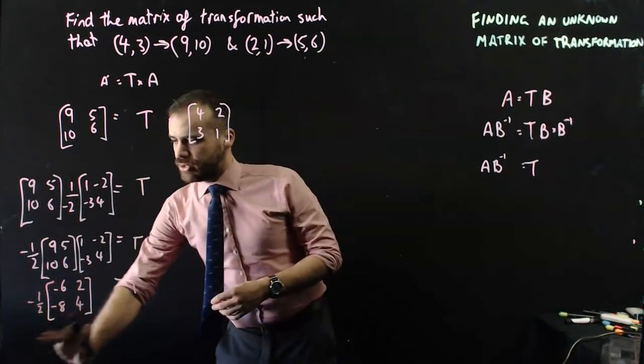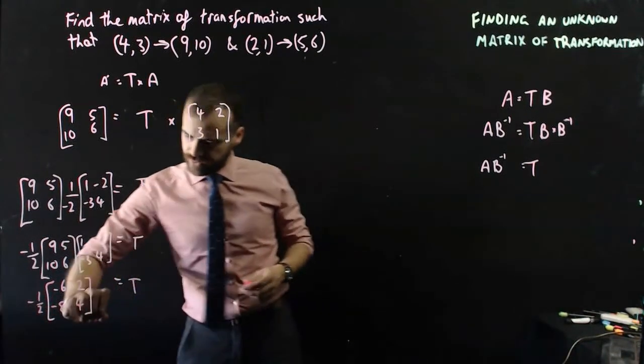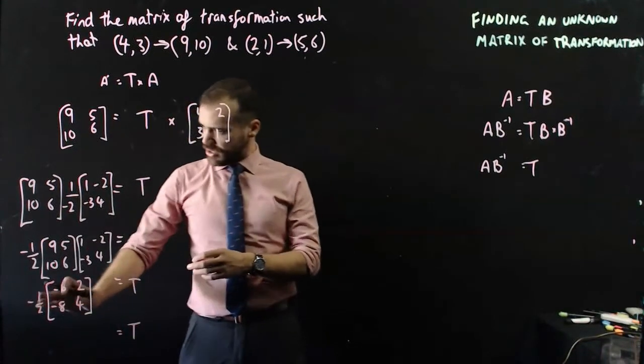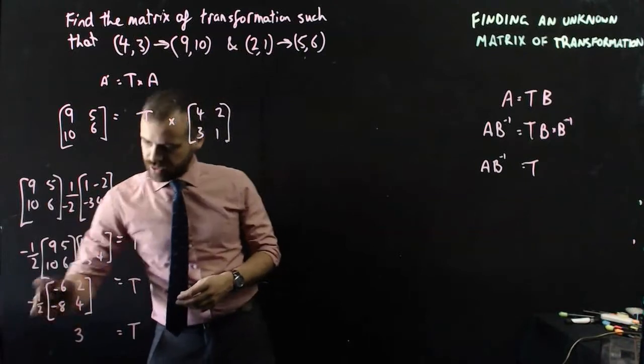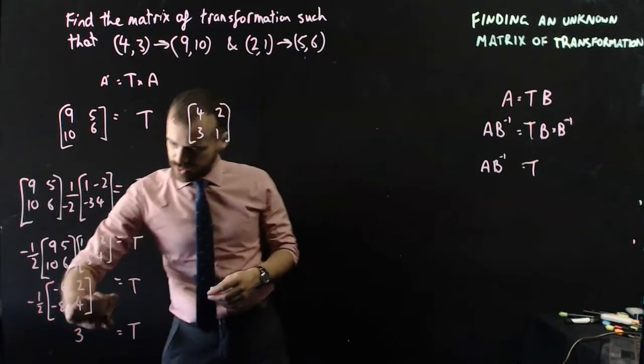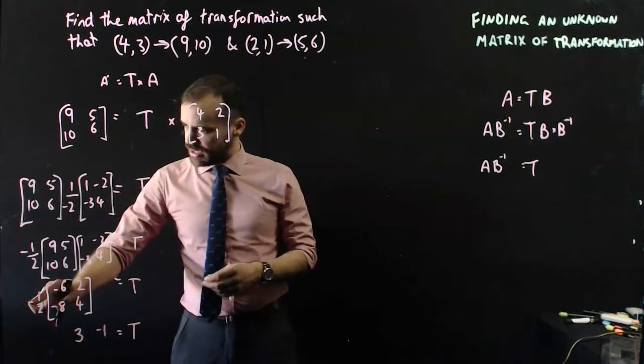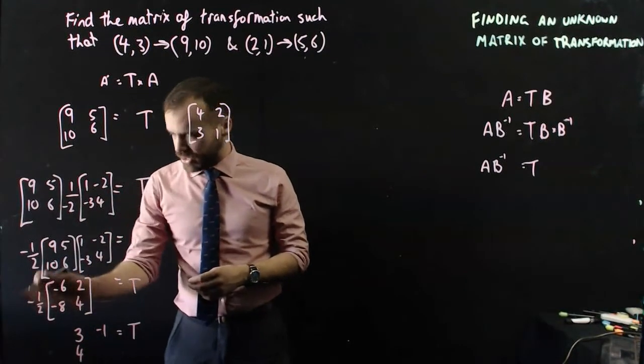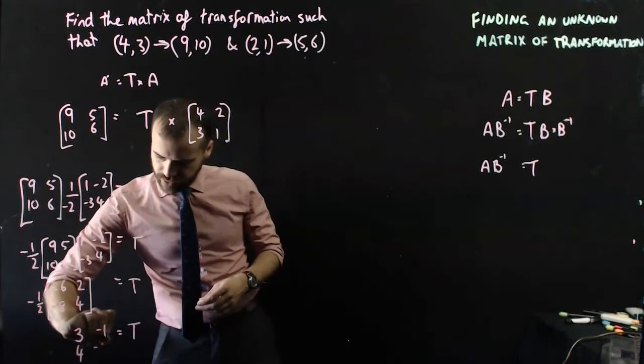And then, we just need to multiply everything by a half. So, that's going to give me a final transformation matrix of: negative 1 half times negative 6 is positive 3, negative 1 half times 2 is negative 1, negative 1 half times negative 8 is 4, and negative 1 half times 4 is negative 2.